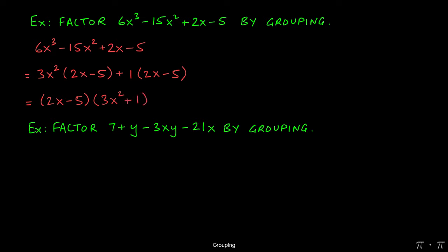For the second problem, we have 7 plus y minus 3xy minus 21x, and we're asked to factor this by grouping again. We begin by factoring out a 1 from the 7 plus y. Nothing else seems to be in common. Factoring out the 1 will just leave us with 7 plus y.